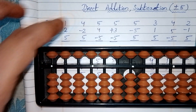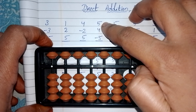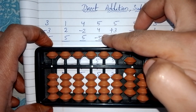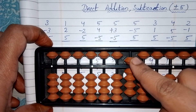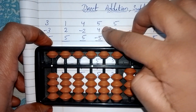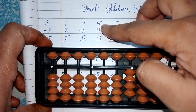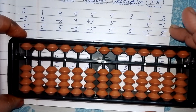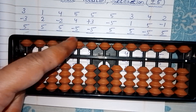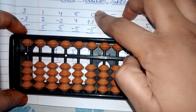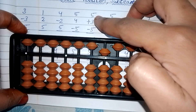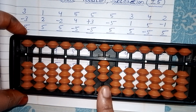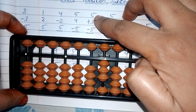Next question: five, four, less five. Add five with your index finger. Add four with your thumb finger. Less five — subtract five with your index finger. The answer is four. Set zero. Next question: five, three, less five. Add five, add three with your thumb finger, then less five — remove five with your index finger. The answer for this question is three.